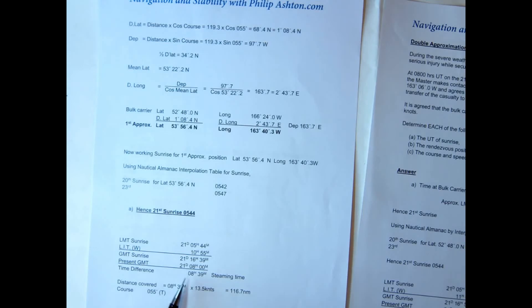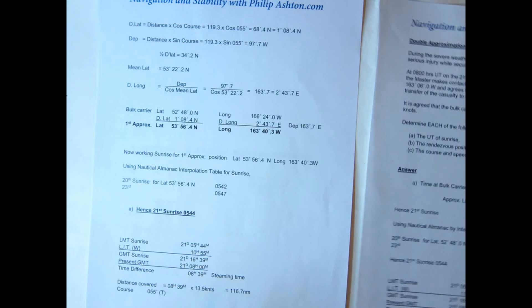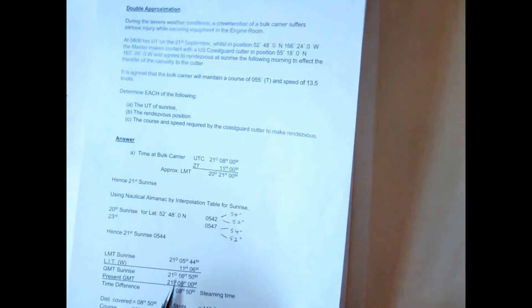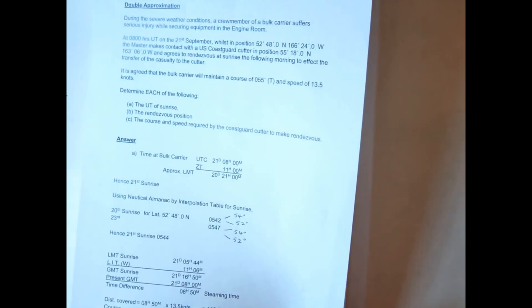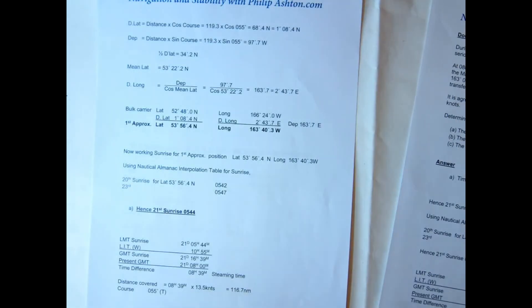So we've got our GMT of sunrise. So now our time difference is 8 hours 39 minutes. 8 hours 39. So the previous one, because it was 11.06, we had a steaming time of 8 hours 50. Now that's going to drop to 8 hours 39 to get our second approximate position.